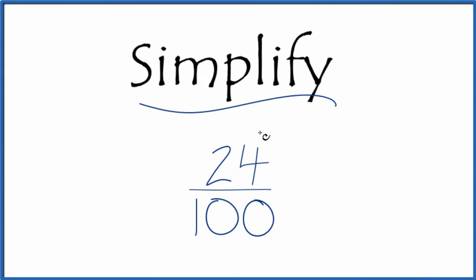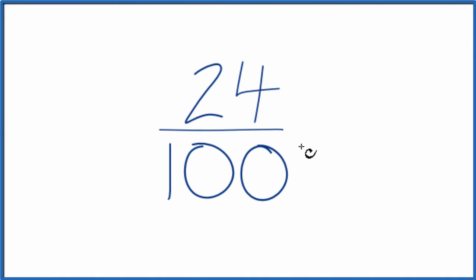Let's simplify the fraction 24 hundredths. So what we want to do is find another fraction that's equivalent to 24 over 100. It has the same decimal value, it's just that we've reduced it to lowest terms.